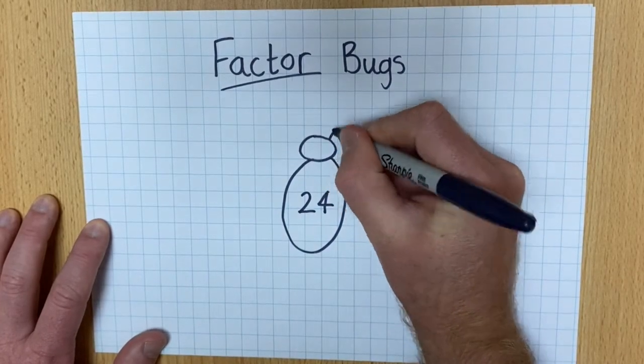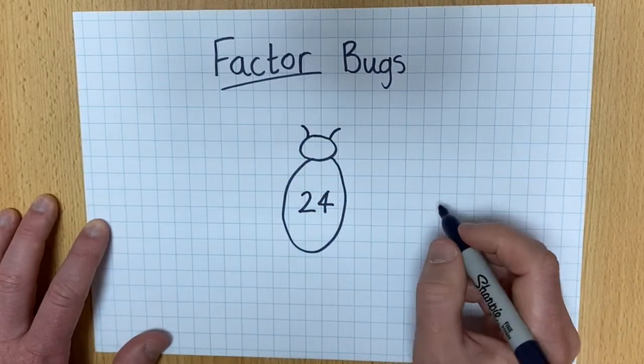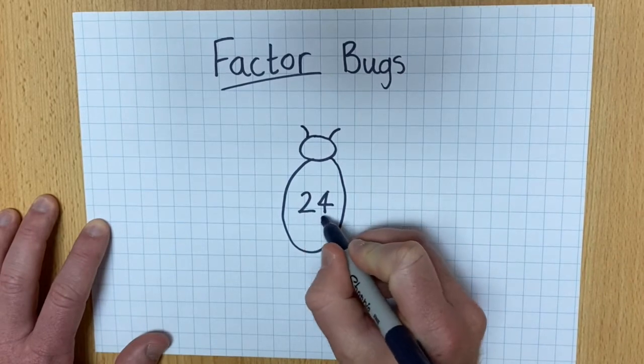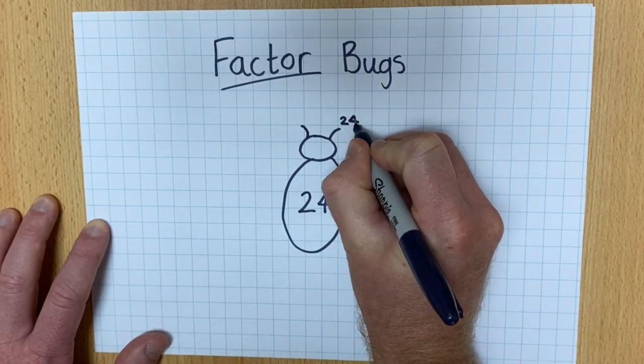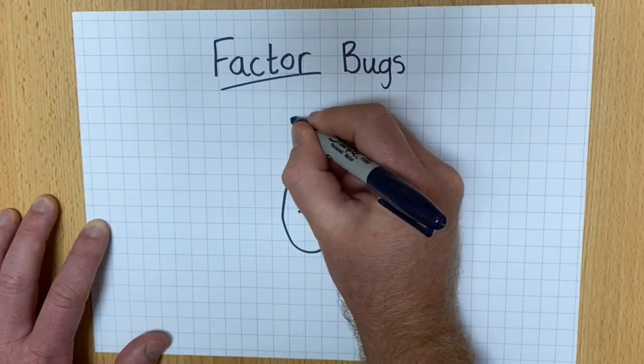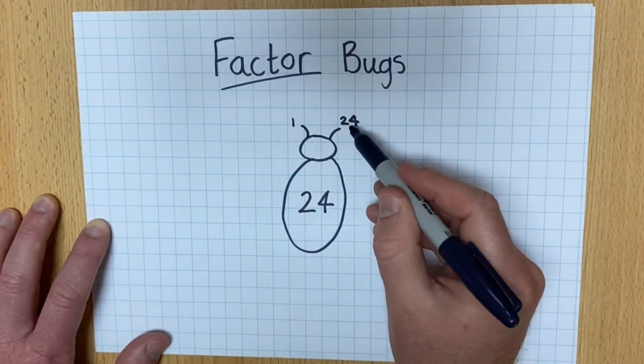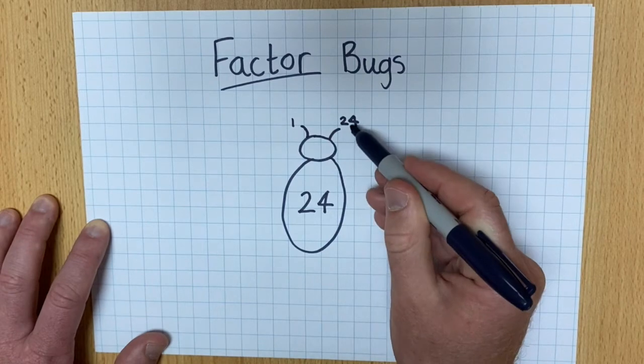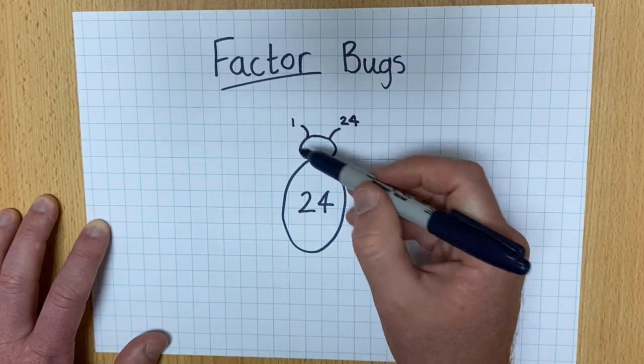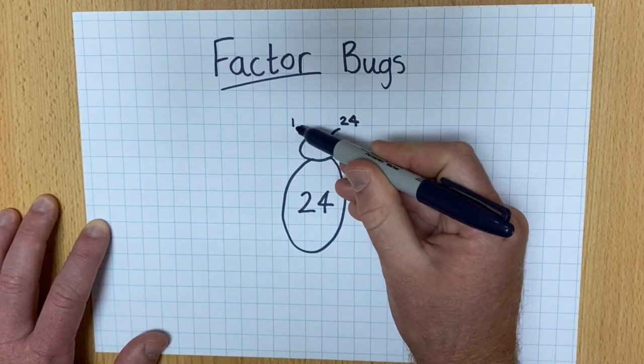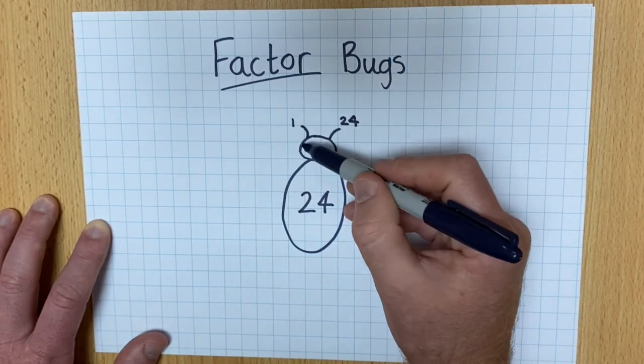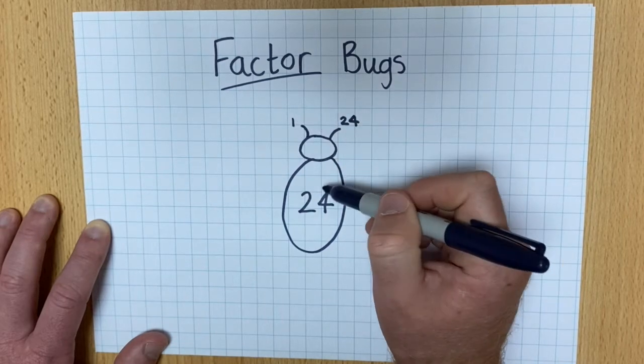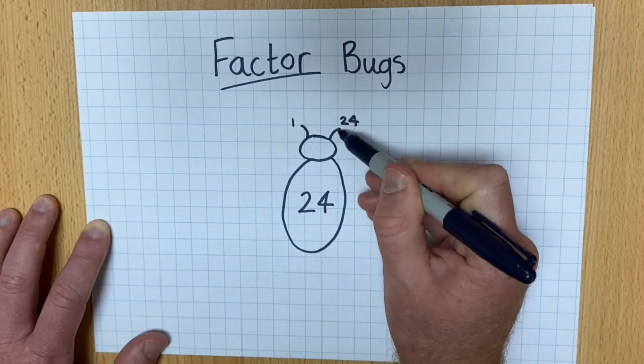Then at the top where the head is, the two antennae will be the number itself, so the product 24, and the number one. Because 24 is in the 24 times table, and 24 is also in the one times table. Every single number is in the one times table, isn't it? So you will always have one and you will always have the number itself.